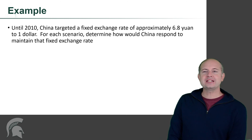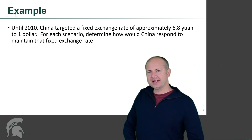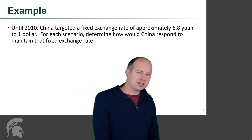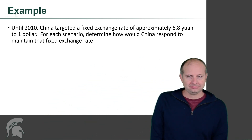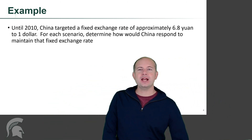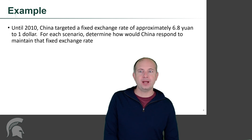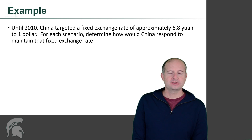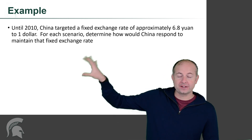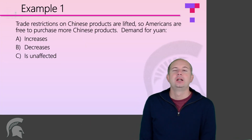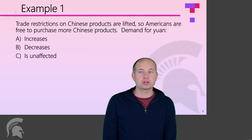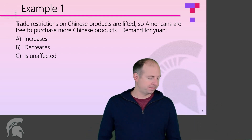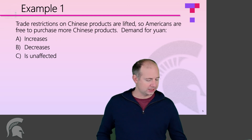Until 2010, China targeted a fixed exchange rate of approximately 6.8 yuan to $1. For each of these scenarios, determine how China would respond to maintain that fixed exchange rate. Let's suppose that trade restrictions on Chinese products are lifted, so Americans are free to purchase more Chinese products.